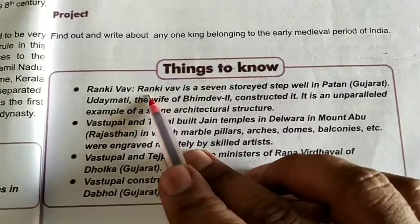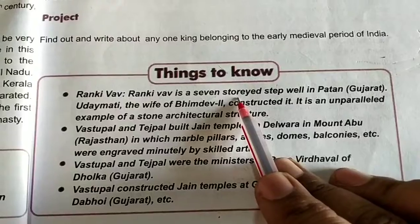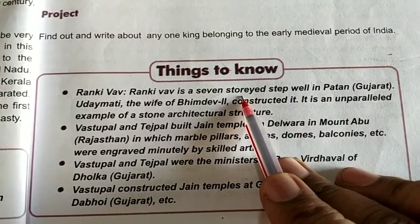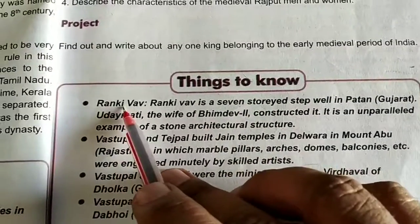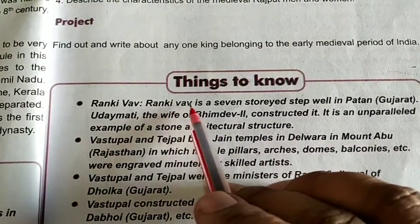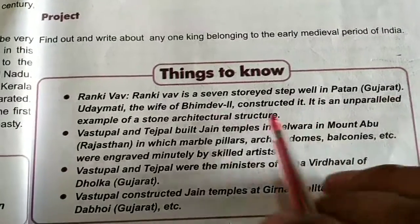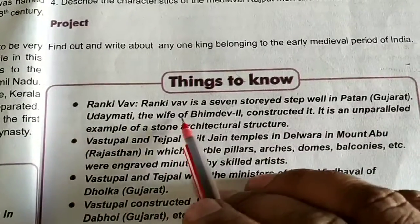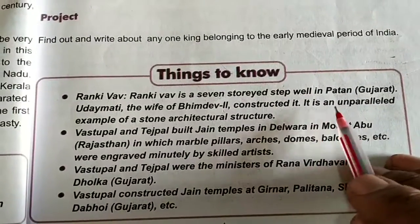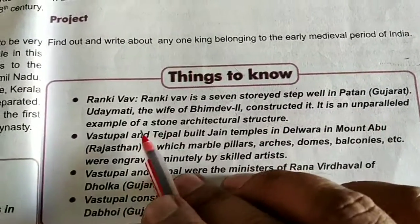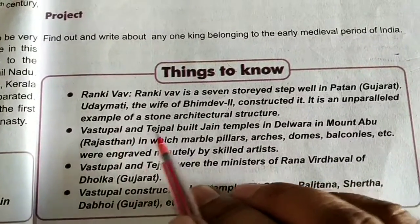Ran Ki Vau is a seven-storied step well in Patan, Gujarat. Uday Mati, the wife of Bhimdev II, constructed it. It is an unparalleled example of a stone architectural structure.